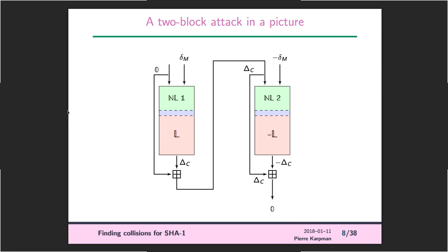We have two blocks, because the attack uses two blocks of messages. One rectangle represents one computation of SHA-1. We have two inputs: on the left the initial value, and in red the message. We want a collision — basically everything at the start is similar. We have the same IV and we want different messages that eventually hash to the same value.